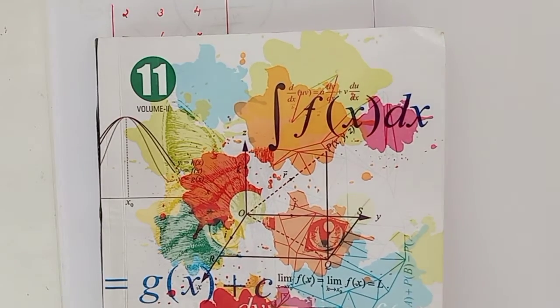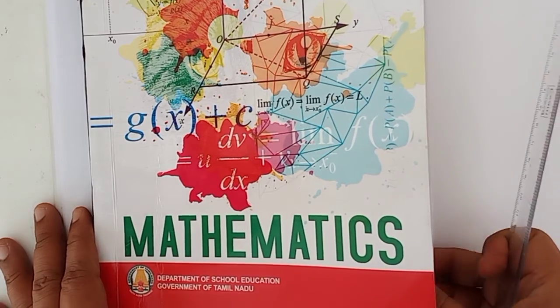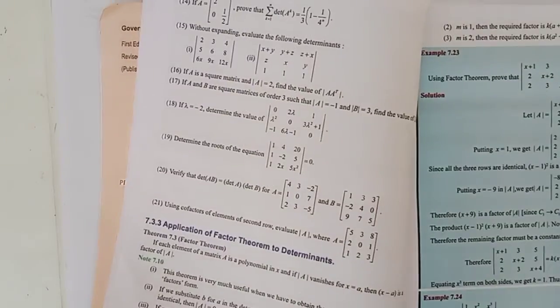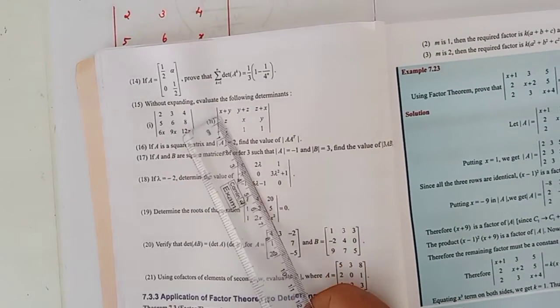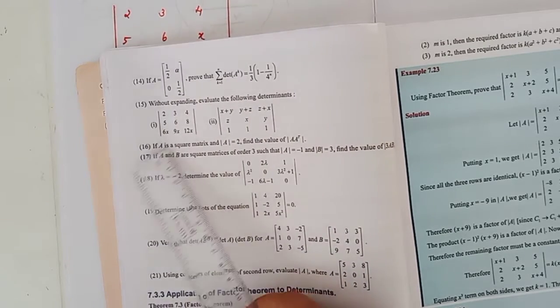Hi student, this is Rukumar. 11th standard mathematics, chapter number 7, continuation of exercise 7.2, now problem number 15. Without expanding, evaluate the following determinants. We can do one by one. Now subdivision number 1.